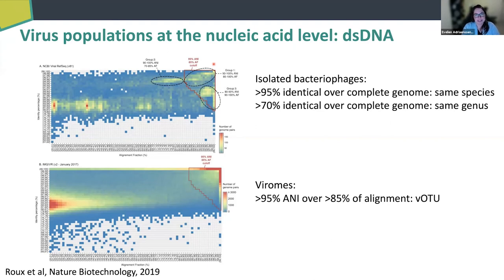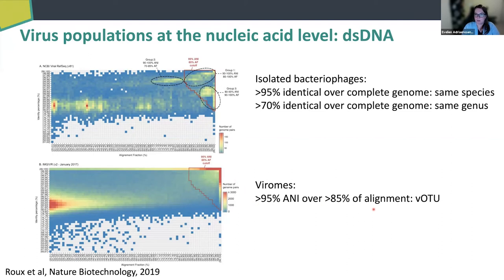It became even more interesting because, independent of us doing that, research from Matt's group showed that this 95% number is biologically relevant, especially in the oceans where a lot of research is being done. When you do this with the whole IMG/VR database, it turns out it's a little more fluid — a cutoff of 85% ANI over 85% of the query length gives more meaningful clusters for viral OTUs. This is roughly equivalent to the species level, so I use VOTUs for species-level populations in my papers.